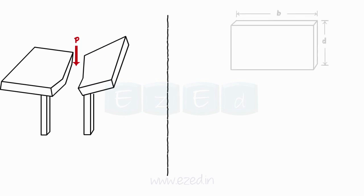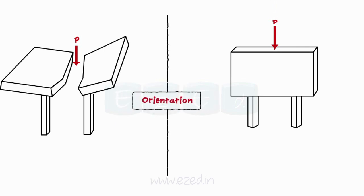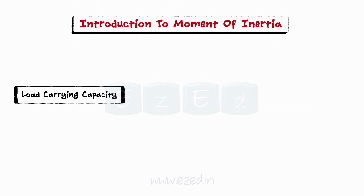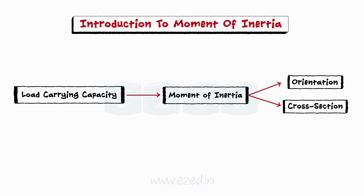Now, the same plank is held vertically and then supported by two supports as shown. The load P is applied at the center of the plank. We can observe that the plank does not break down or bend. We observe that the same wooden plank behaves in two different ways when its orientation is changed. This phenomenon can be explained technically by the term moment of inertia. The load carrying capacity of a member depends upon its moment of inertia. Thus, the moment of inertia of a body plays an important role in deciding the orientation of cross-section to bear the appropriate loads.